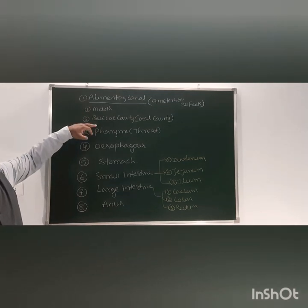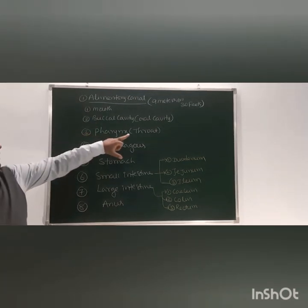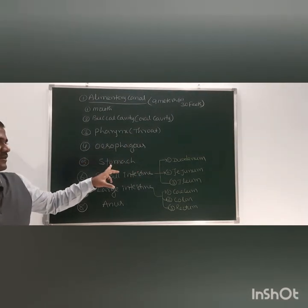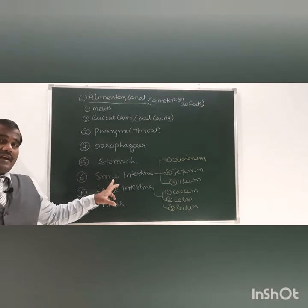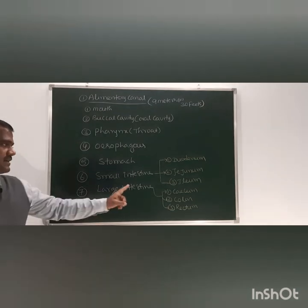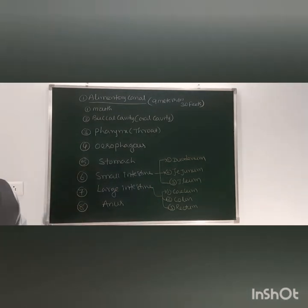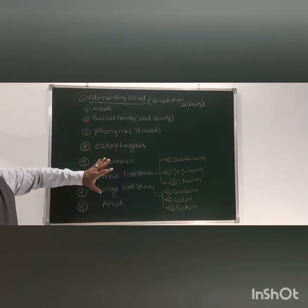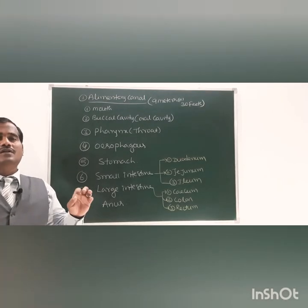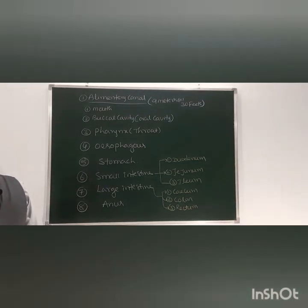To recap: mouth, buccal cavity (oral cavity), pharynx (common name: throat), esophagus, stomach, small intestine with its three parts — duodenum, jejunum, ileum — large intestine with cecum, colon, rectum, and anus. These parts together form the alimentary canal, which is a coiled tube of nine meters or 30 feet.